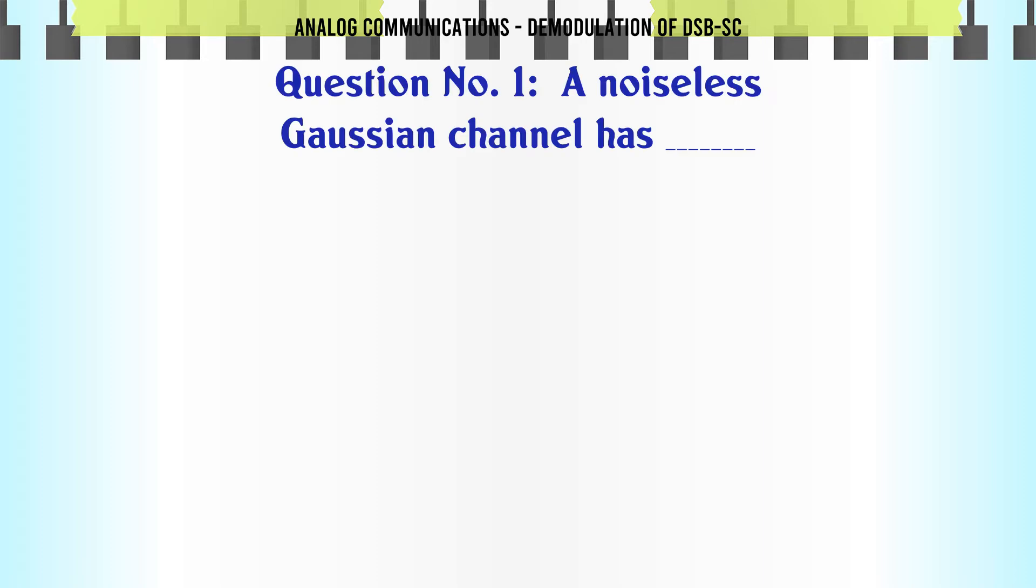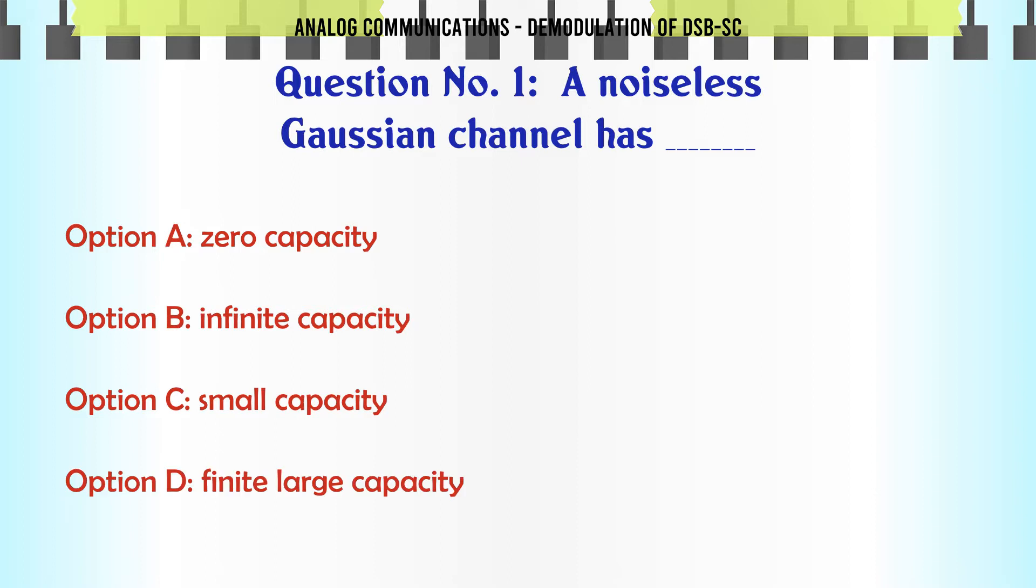A noiseless Gaussian channel has: A, zero capacity; B, infinite capacity; C, small capacity; D, finite large capacity. The correct answer is infinite capacity.